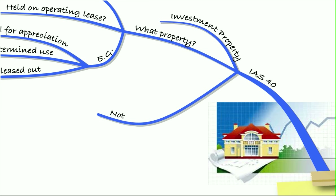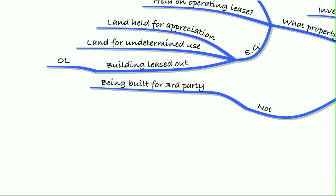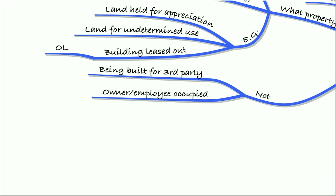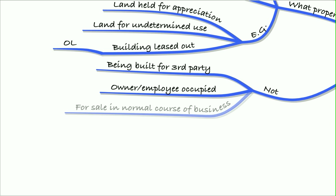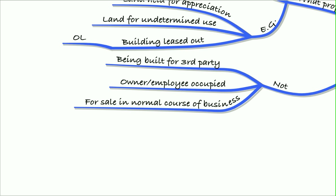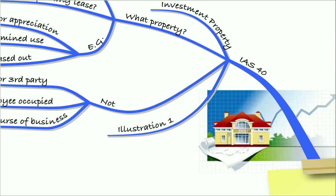Things that it won't be: it's not buildings that are being built for a third party, or any buildings that we occupy ourselves — that's going to be under IAS 16. Nor is it going to be any buildings that are for sale in the normal course of business; those would be our stock, not investment property.